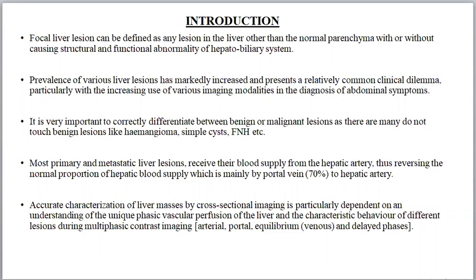It is very important to correctly differentiate between benign and malignant lesions, as there are many do-not-touch benign lesions like hemangioma, simple cysts, FNH, etc. Most of the primary and metastatic liver lesions derive their blood supply from the hepatic artery, thus reversing the normal proportion of hepatic blood supply, which is mainly by the portal vein to the hepatic artery.